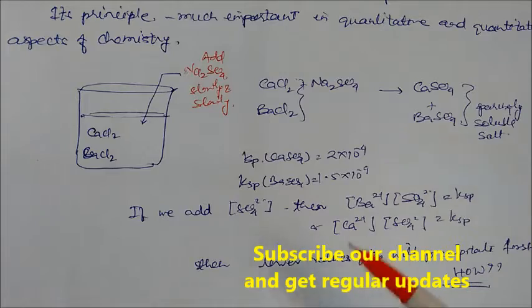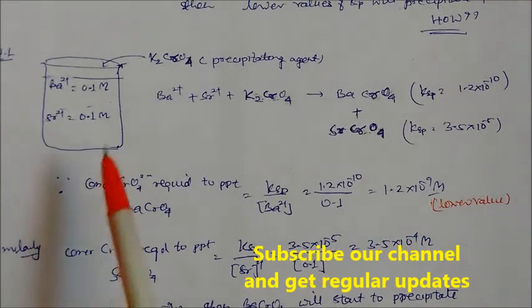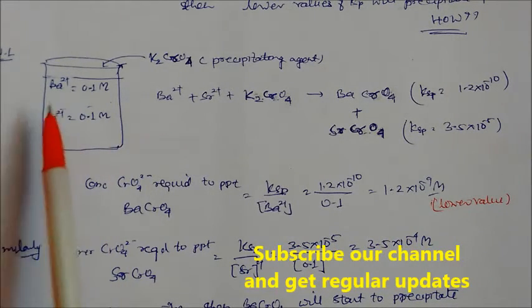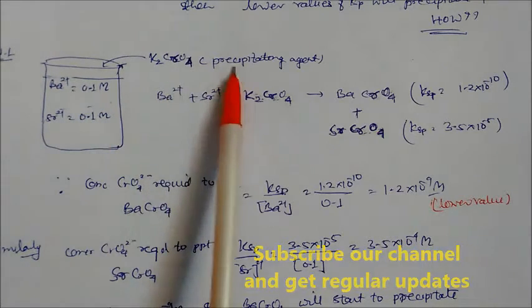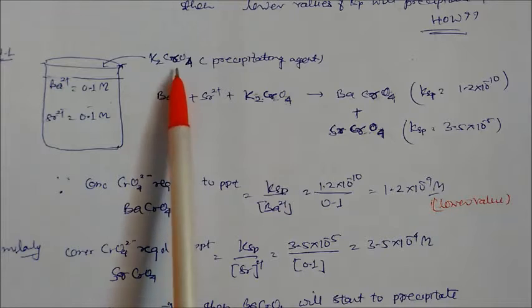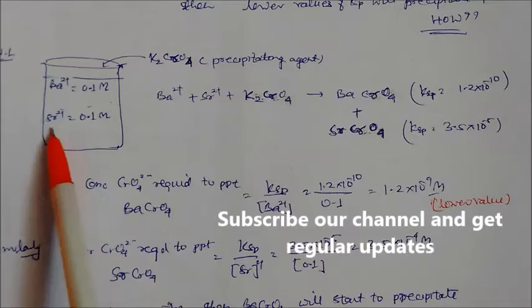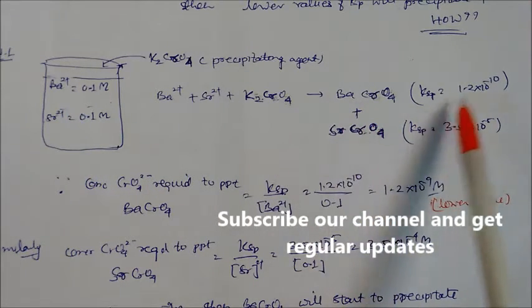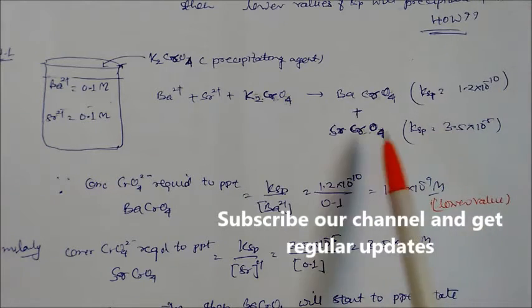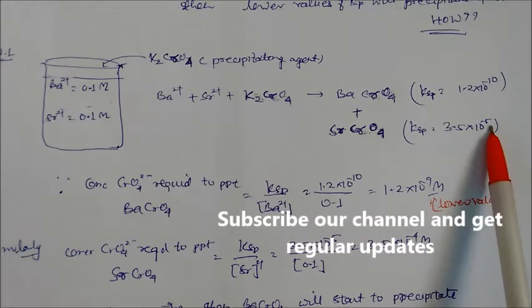Let us understand through Numerical Example 1. A vessel consists of two ions: barium ion and strontium ion, each at a concentration of 0.1 molarity. The precipitating agent is K₂CrO₄ (potassium chromate). This will react with barium and strontium to produce barium chromate and strontium chromate respectively. The Ksp of barium chromate is 10⁻¹⁰ and for strontium chromate it is 3.5 × 10⁻⁵.